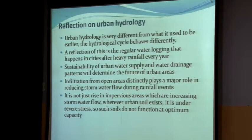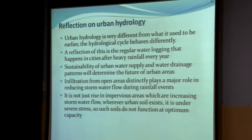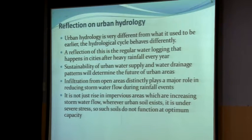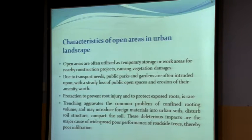Infiltration from open areas is a major source of reducing storm water flow during rain events. It is not just the storm flow that goes through the drainage system but also the water that is absorbed by the soil. It is not just the rise in impervious areas but also the fact that urban soil cannot be compared with agricultural soil as far as its ability to absorb water is concerned. It is under severe stress.